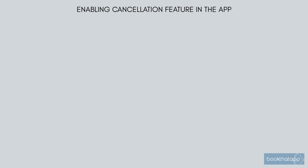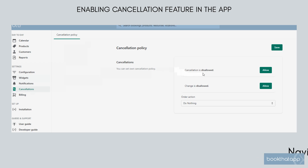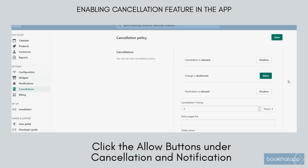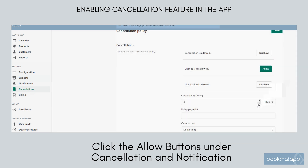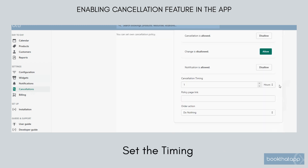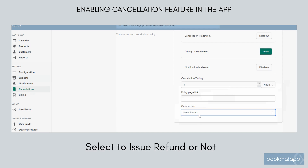Enabling the cancellation feature in the app. Navigate in the app under Cancellations. Click the Allow button under Cancellation. Click the Allow button under Notification for you to be notified whenever a booking is cancelled. Set your timing for either the number of hours, days, or weeks prior to the booking start that customers are permitted to cancel. Add a Policy page link if available, and under Order Action, choose to either issue a refund upon cancellation or not.